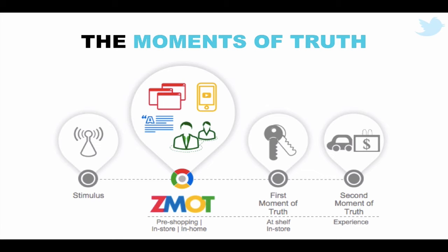Let me break down these four stages with an easy explanation using the automotive industry. Let's say you see a TV advertisement this evening for the new Audi A4. You realise you're in the market for a new car, but just because you've seen that TV ad, it does not mean you directly walk into the dealership and book a test drive or buy the car straight away. What will happen invariably is you'll go online and start researching how suitable the Audi A4 would be for your needs — that's the zero moment of truth.